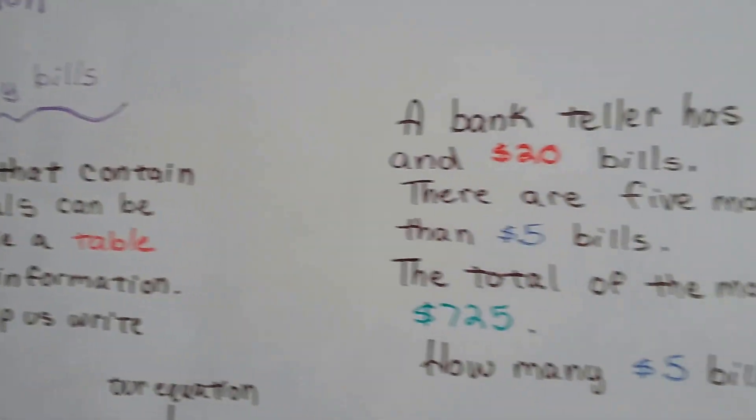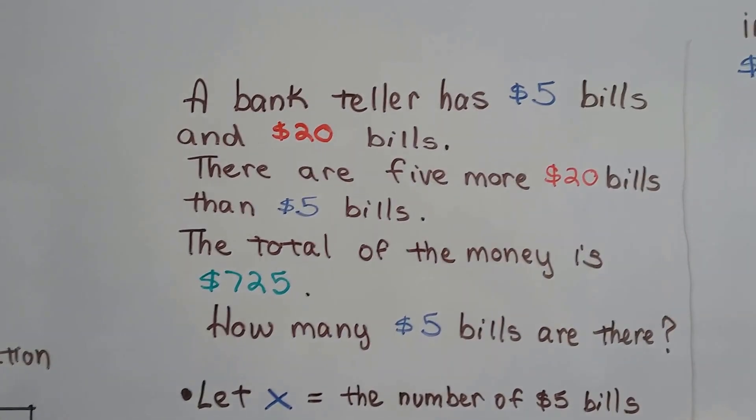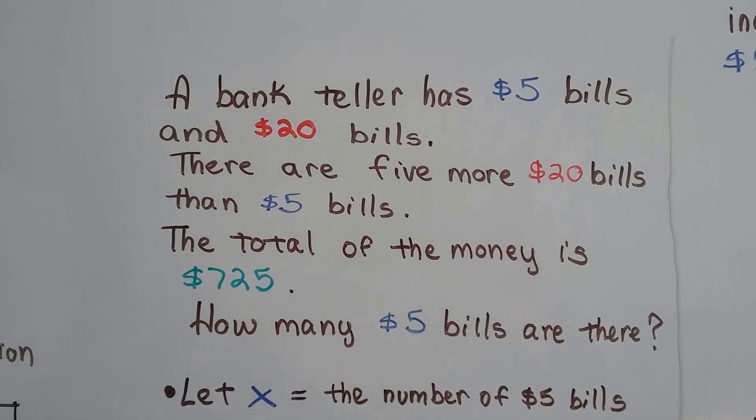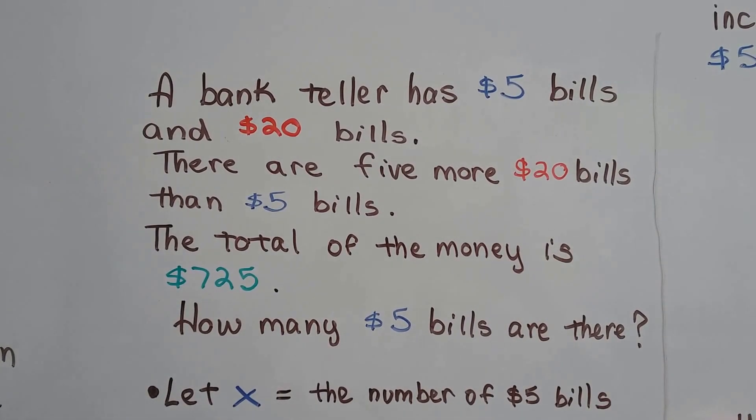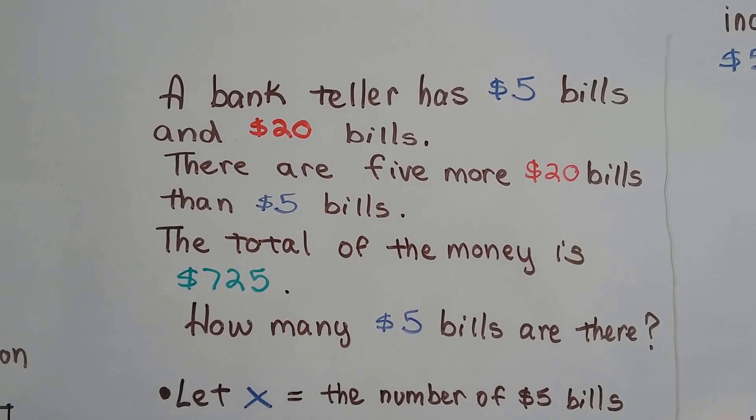Here's our problem. A bank teller has $5 bills and $20 bills, and there's five more $20 bills than $5 bills, and the total of the money is $725. How many $5 bills are there?